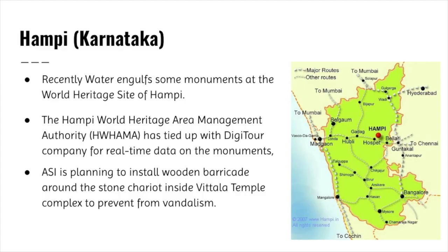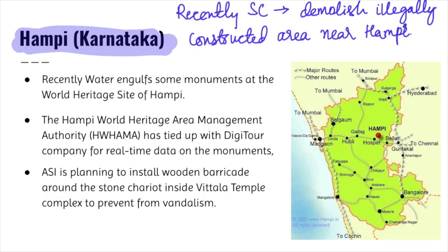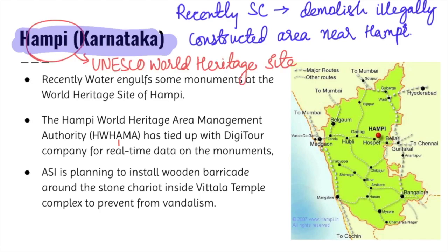Now we will take up Hampi, situated in Karnataka. It has been constantly in news — firstly because the Supreme Court ordered that the Hampi Management Authority can demolish illegally constructed structures in the nearby Hampi region. This is because Hampi is a UNESCO World Heritage Site, just as the group of monuments at Mahabalipuram has earned UNESCO World Heritage status.